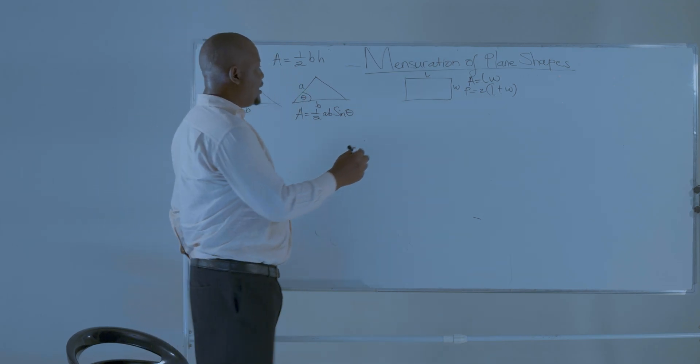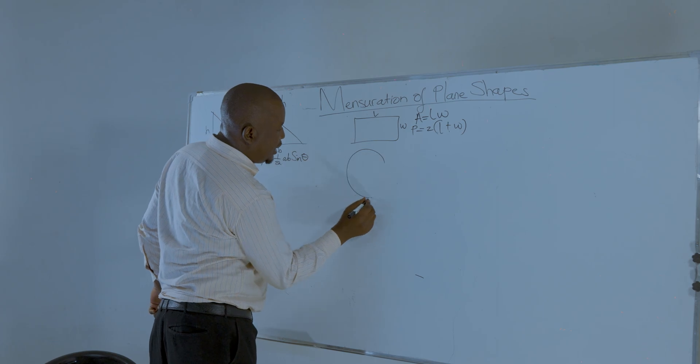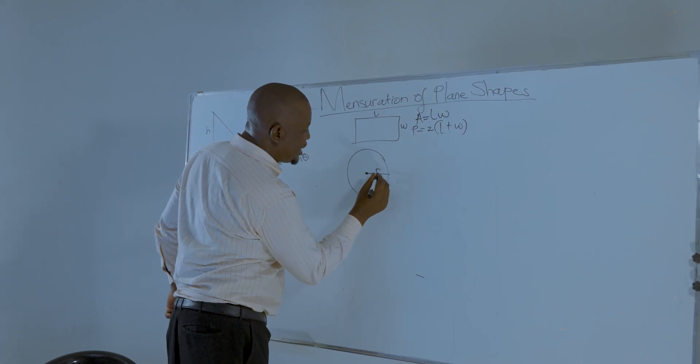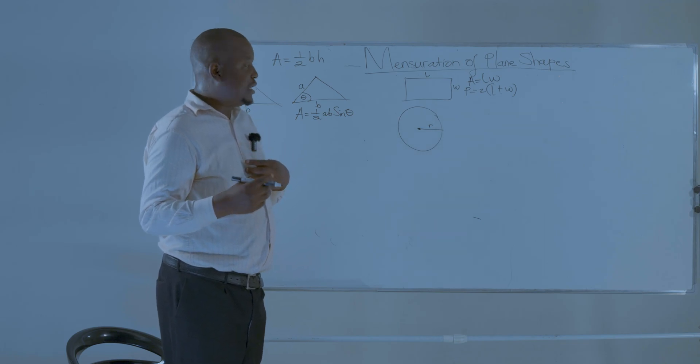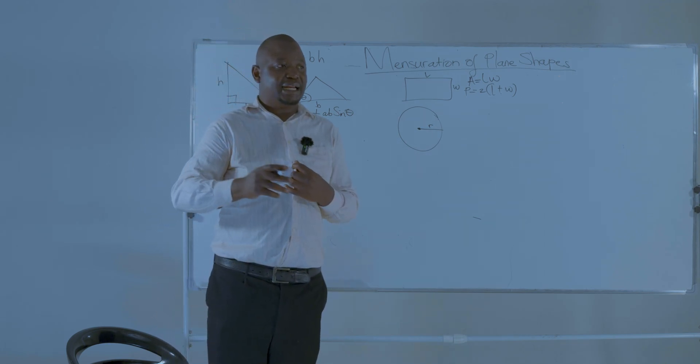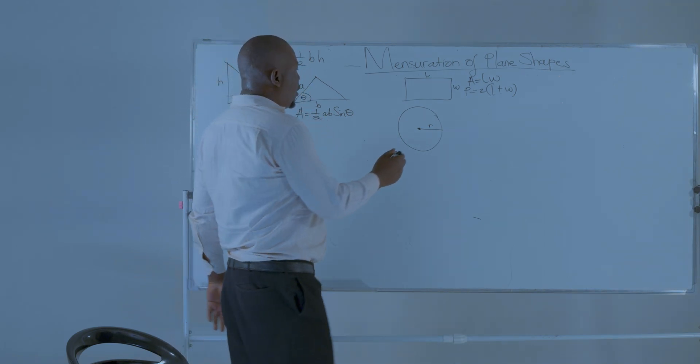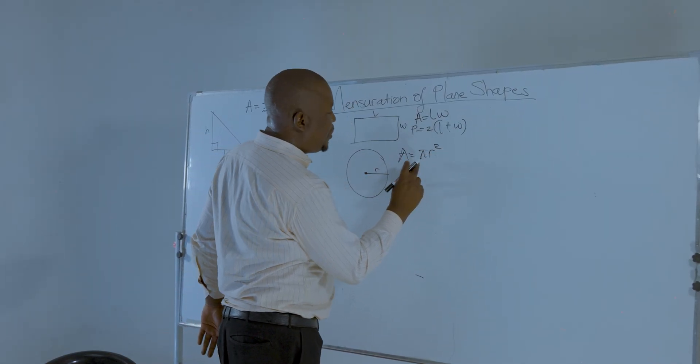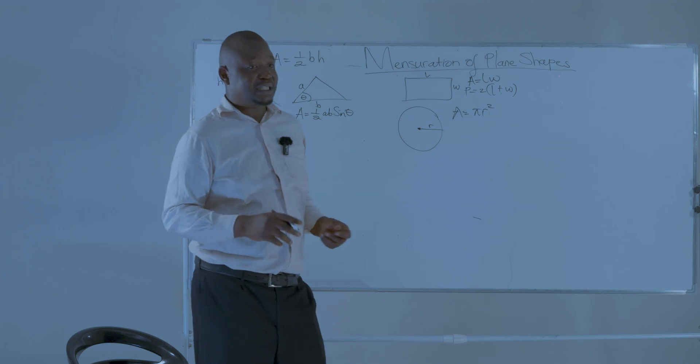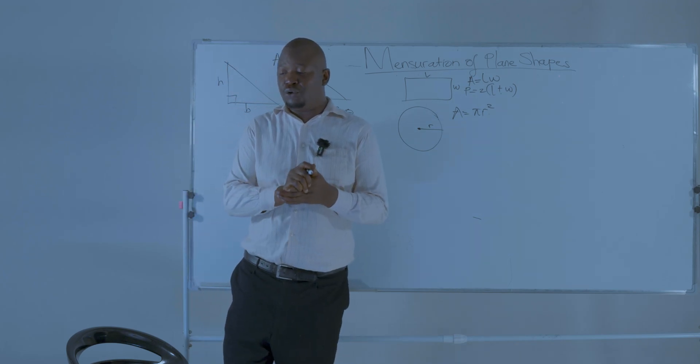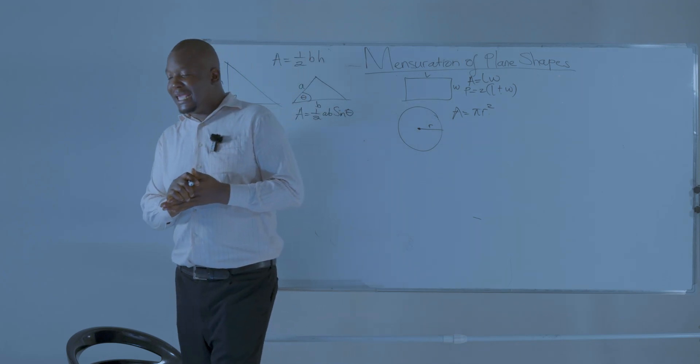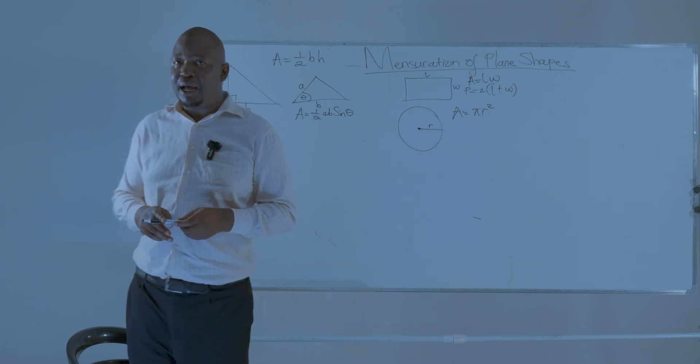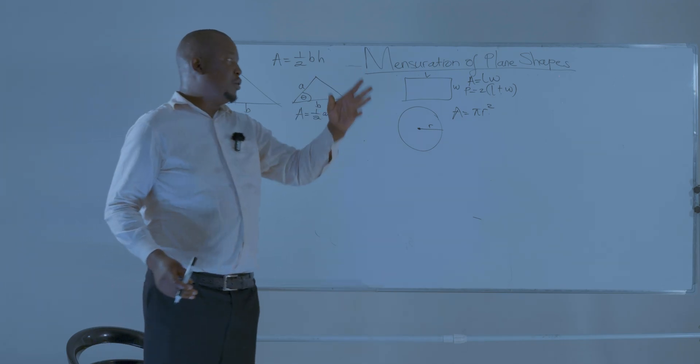Then the next shape we're going to look at is the circle. The circle has got a center, and the line which comes from the center to any point on the circumference of a circle is known as the radius. So the area of a circle is given by pi r squared. Pi is a Greek letter of the alphabet which is approximated as 22 over 7. It's a non-recurring, non-terminating decimal number, 3.14, it goes on and on and on.